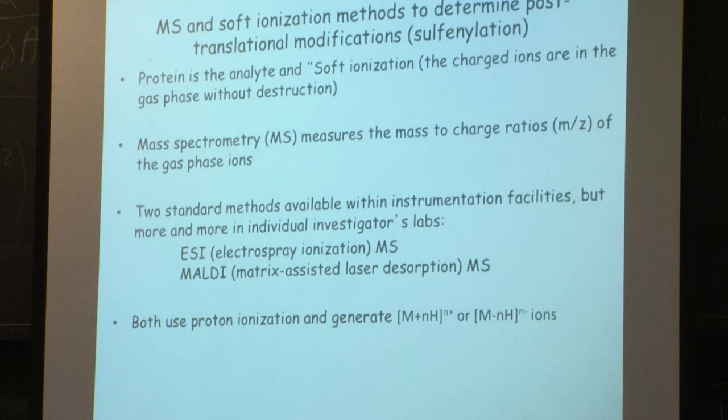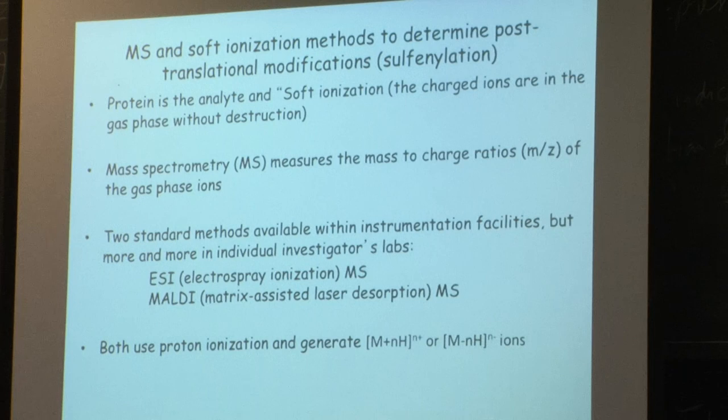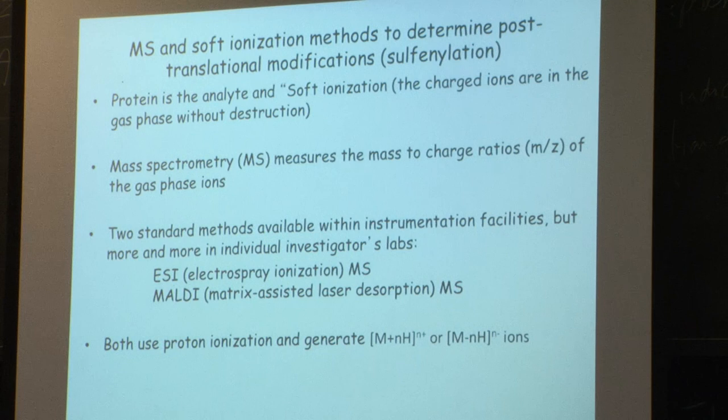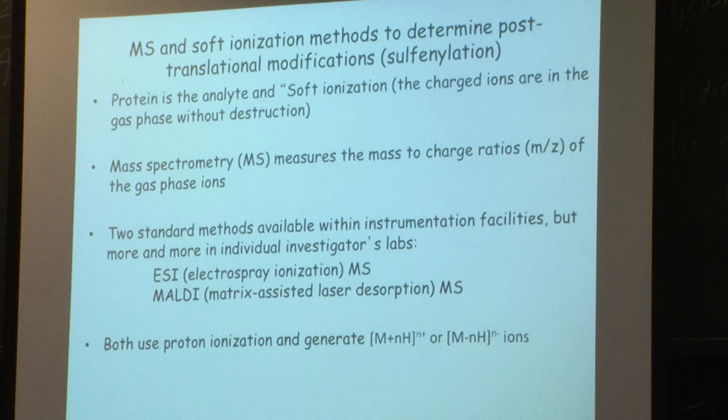What we're doing today is simply looking at the technology that's been developed to get a handle on whether you've got sulfenylation — not really focusing on the biology of the consequences. We're using mass spec — specifically a method of mass spec. If you know something and I say something wrong, you should speak up, because I'm not a mass spec expert. We need a way of trying to figure out these hundreds of variations. I'm going to give you a very simplified overview of what you need to think about.